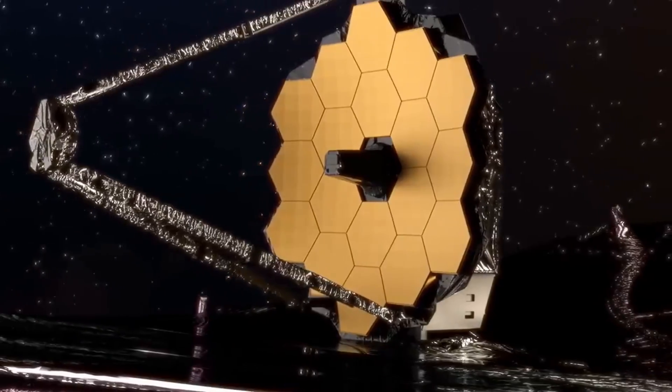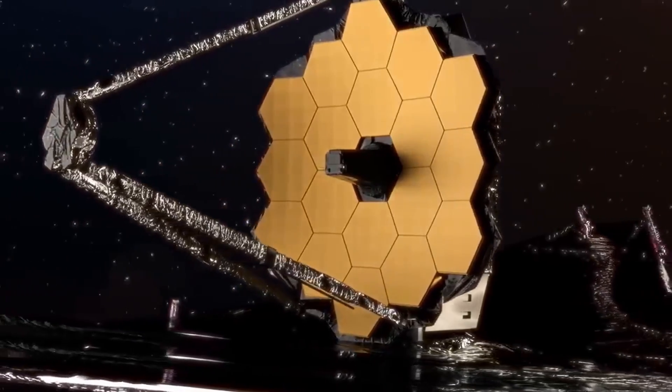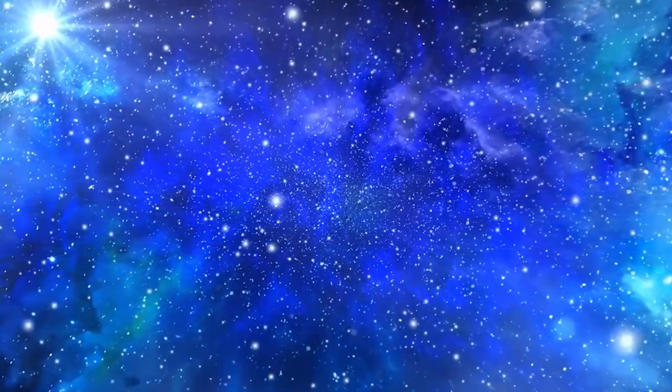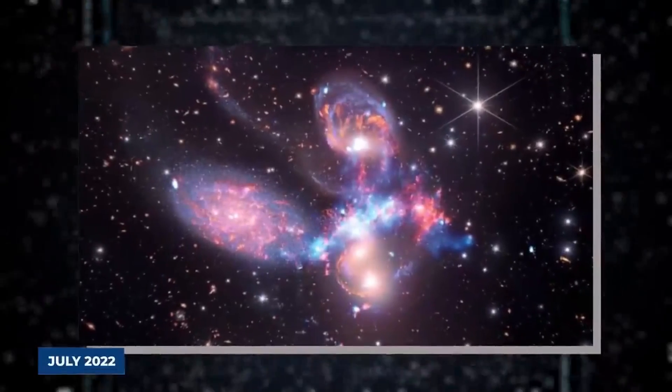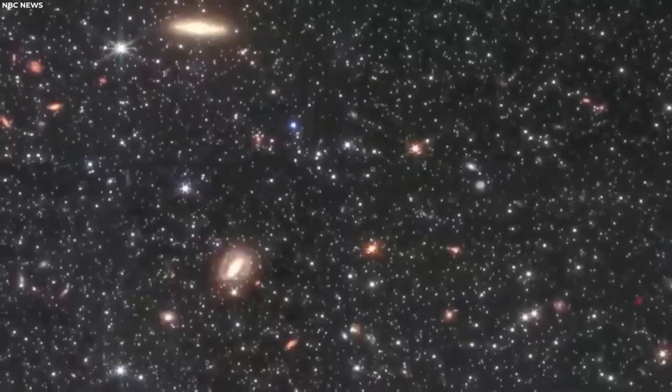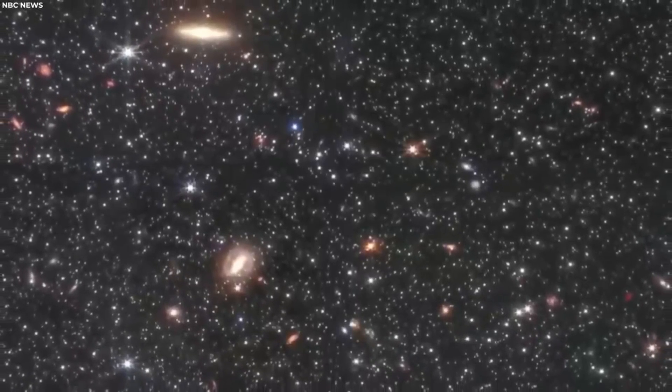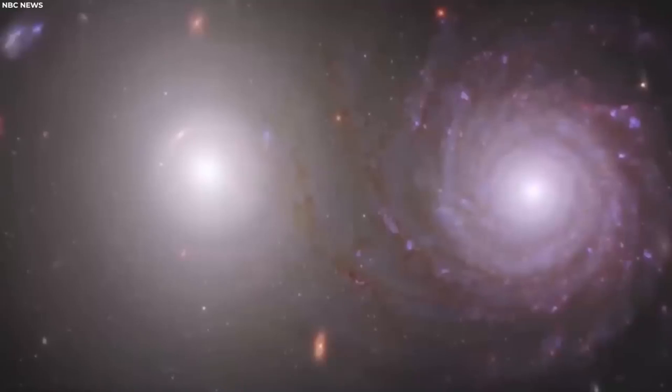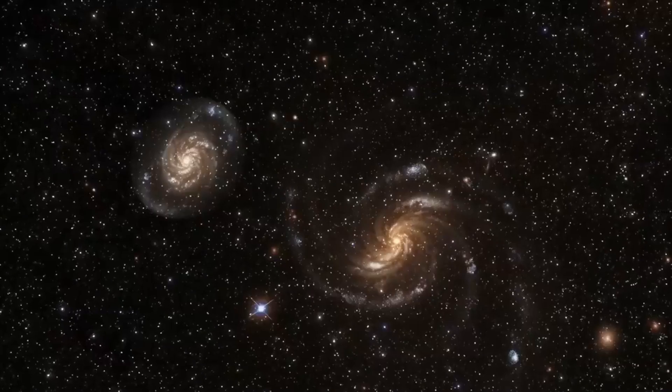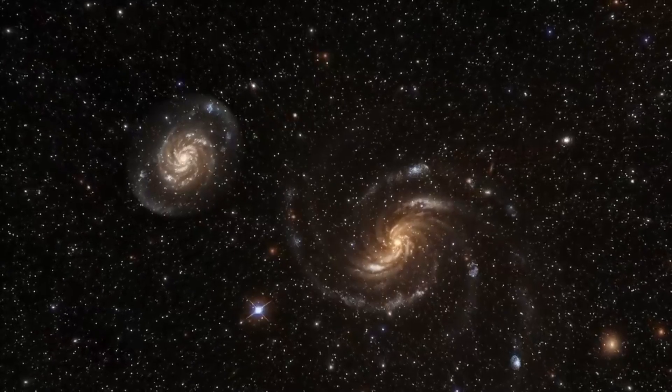The James Webb Space Telescope's ability to detect faint, distant galaxies has already yielded groundbreaking discoveries. In July 2022, the telescope captured images of galaxies that existed just 620 million years after the Big Bang. The farthest galaxies ever observed, these observations push our understanding of the early universe to new frontiers, revealing the first galaxies that emerged from the primordial chaos.